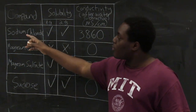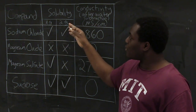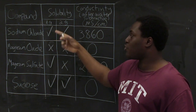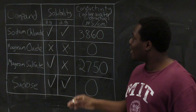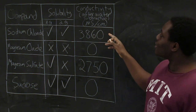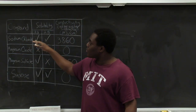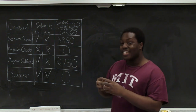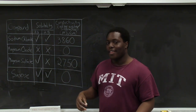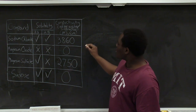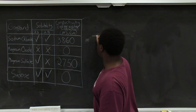If we look at sodium chloride, we can see that at both one gram and two grams, it was able to dissolve in water, and we're able to measure conductivity readings. This means our sodium chloride was able to dissociate into ions when dissolved in water, and this is an extra check for us to determine that sodium chloride is indeed an ionic compound.